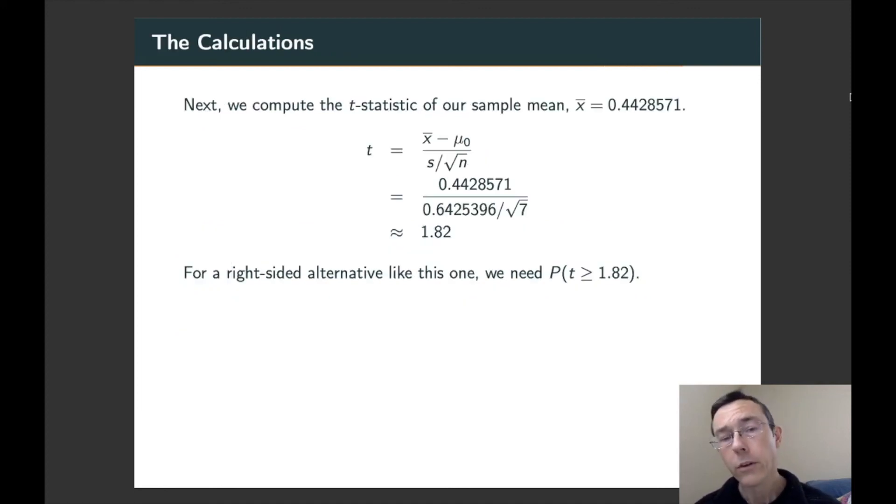Now we need to know how extreme is our sample data in the distribution of all the possible samples we could have gotten under the null hypothesis. So we do the sample mean we got minus the population mean under the null hypothesis, mu naught is 0, divided by the standard deviation of our sample over the square root of n. Overall we get 1.82.